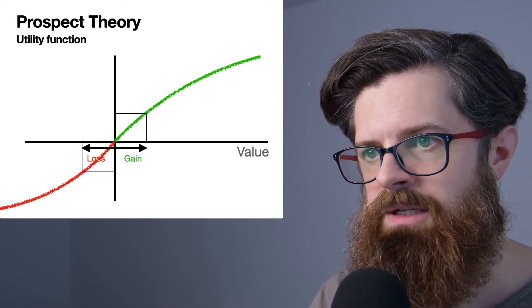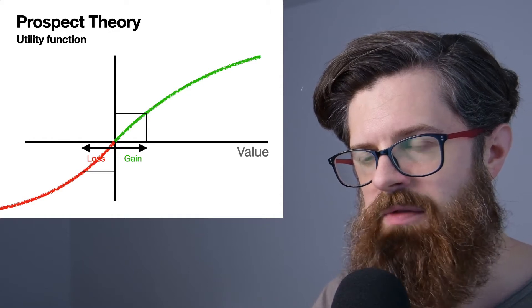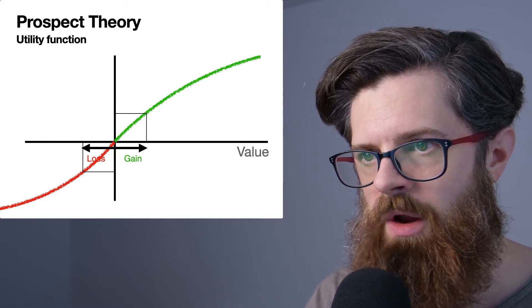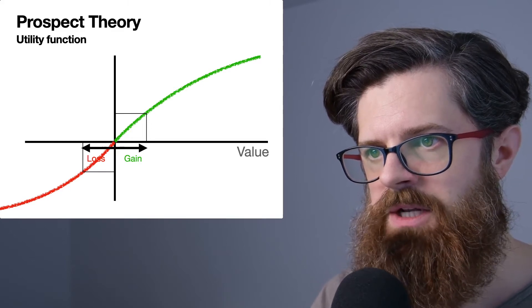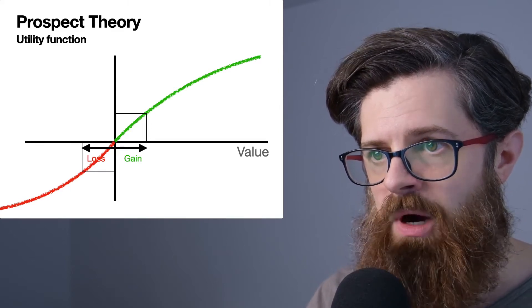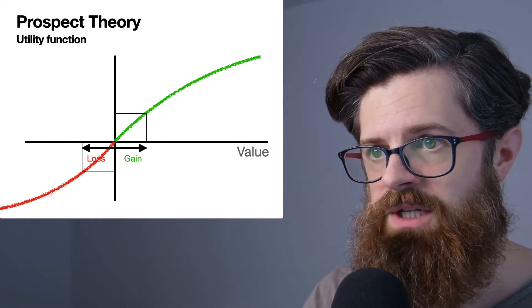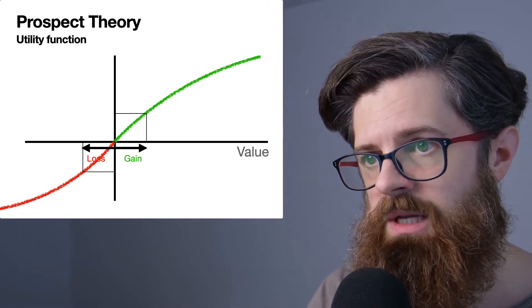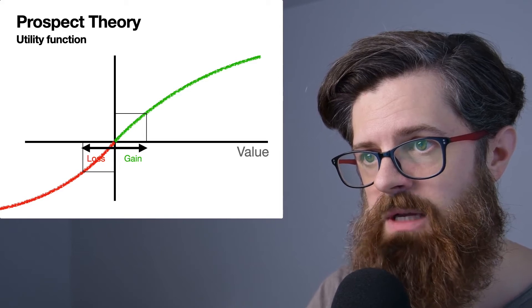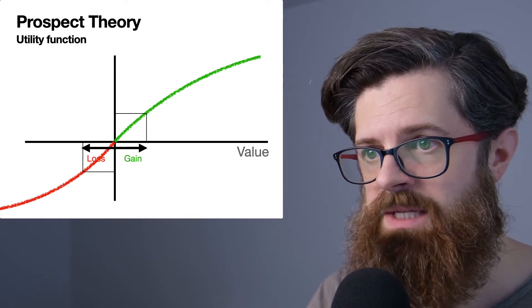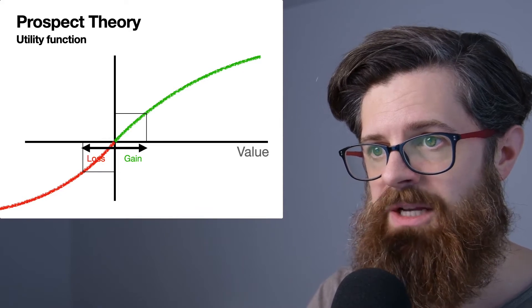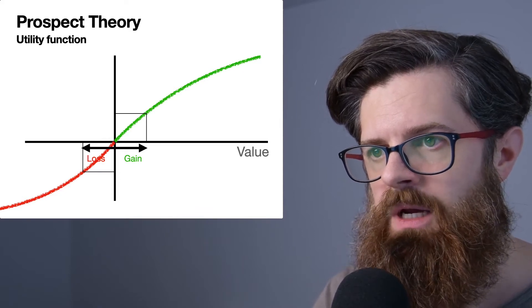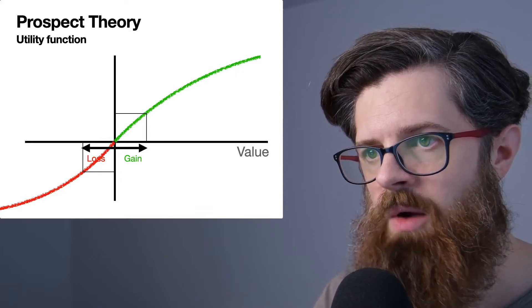If our utility function was like this and we gained something like one cookie, our subjective utility would increase by a certain amount. But according to the shape of this utility function, if we were to lose a cookie, the magnitude of the loss would equal the magnitude of the gain, and so this doesn't work very well in terms of predicting loss aversion.